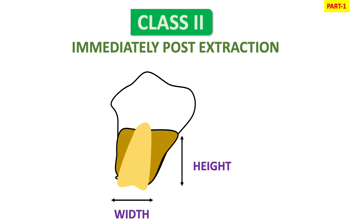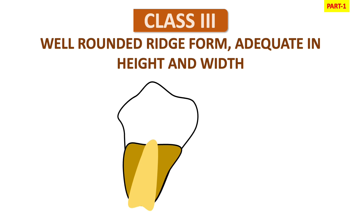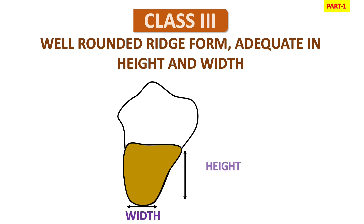In Class 3 we have a well-rounded ridge form, adequate in height and width. As you can see in the figure, there is some resorption of height and width but still height and width are adequate in Class 3. The ridge anatomy will not complicate denture construction — you can easily construct the denture in Class 3 cases with no problem related to stability or retention because the ridges are well-rounded.